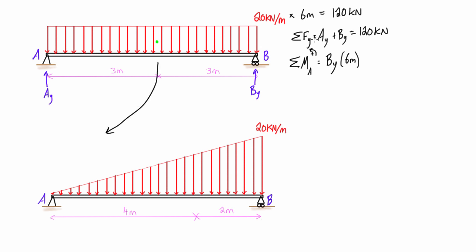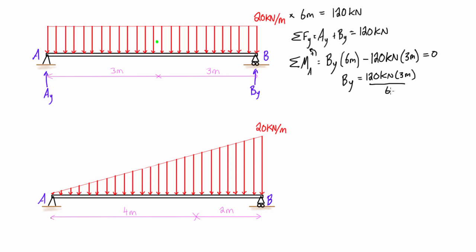We subtract the distributed load's moment contribution. The moment from the distributed load uses the total load of 120 kilonewtons times the distance to the centroid, which is 3 meters. Setting the sum of moments equal to zero and isolating B_y gives us 120 times 3 divided by 6, which is 60 kilonewtons. Plugging back in, A_y equals 120 minus 60, so A_y is also 60 kilonewtons.